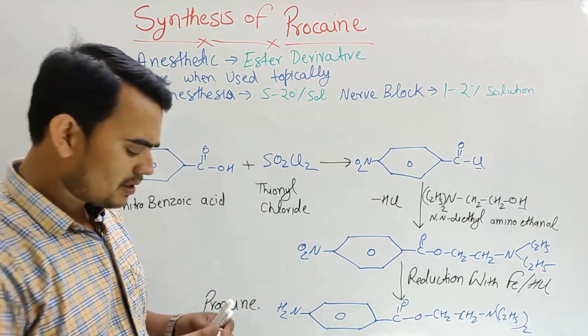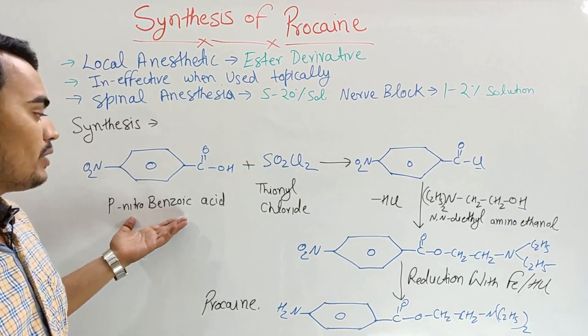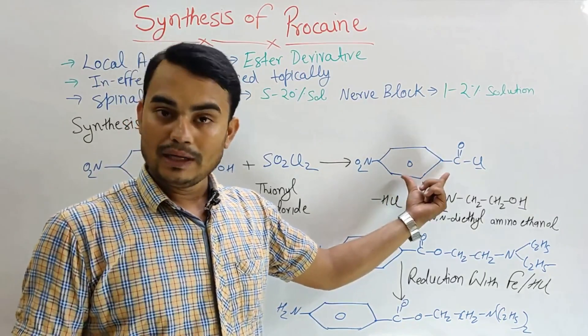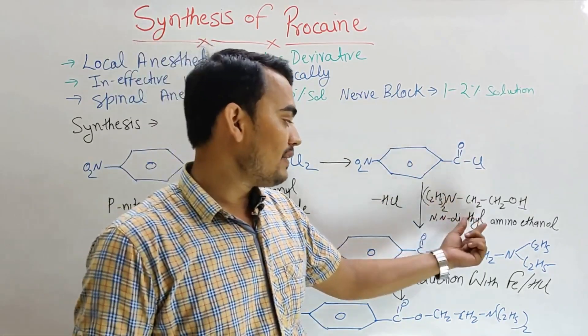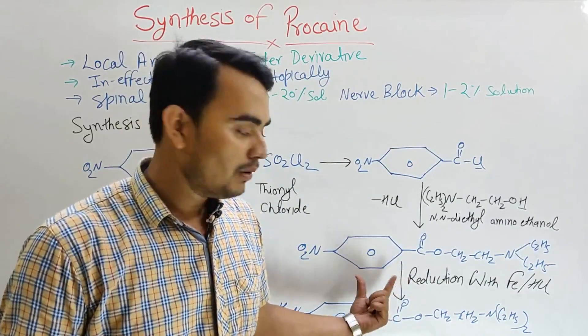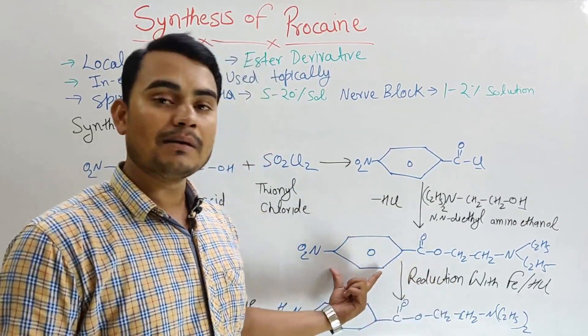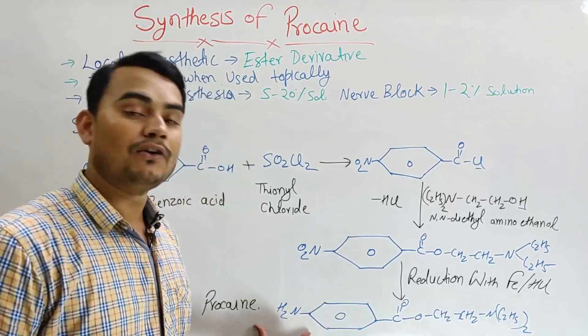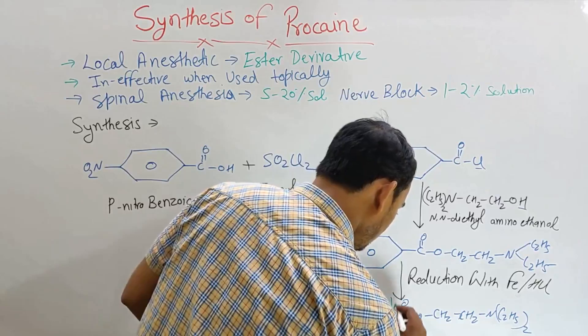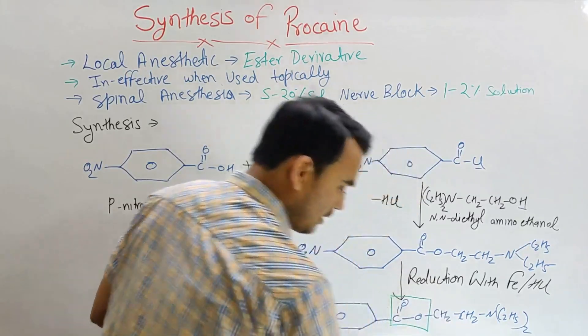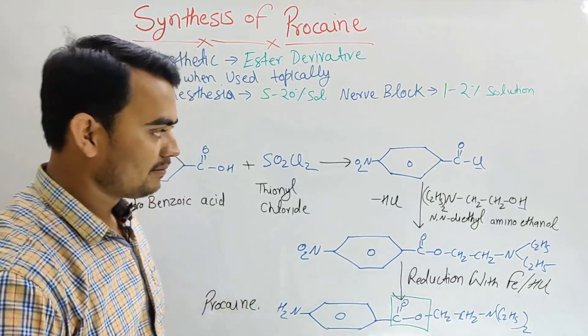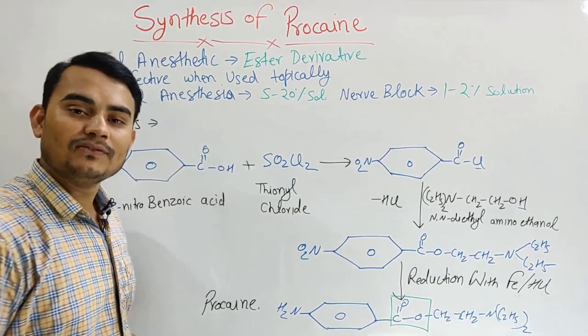Very easy steps. Synthesis starts from para-nitrobenzoic acid, reacted with thionyl chloride and forms a chloroacid. This chloroacid when reacted with N,N-diethyl aminoethanol forms an intermediate ester compound. When the reduction of that ester compound is carried out, then that will form the procaine. Here you can see that this is the ester group, so procaine is an ester derivative. This is the synthesis of procaine.